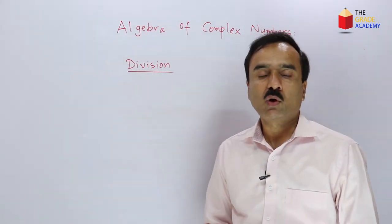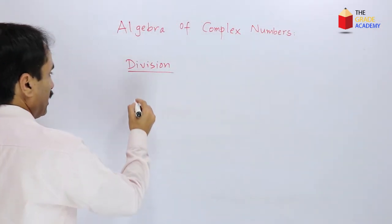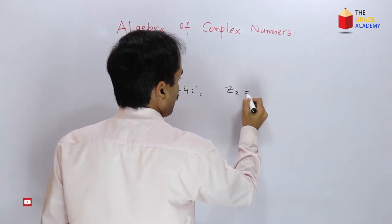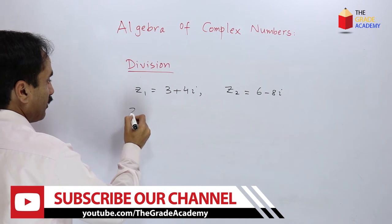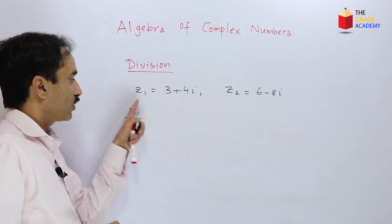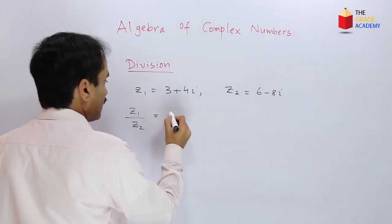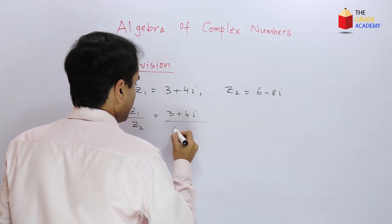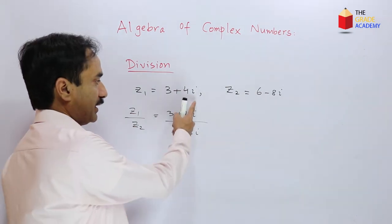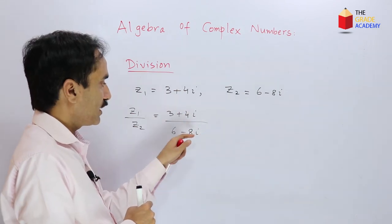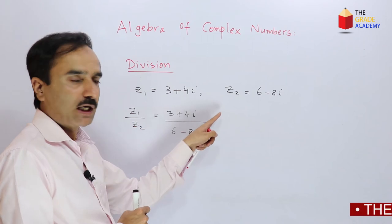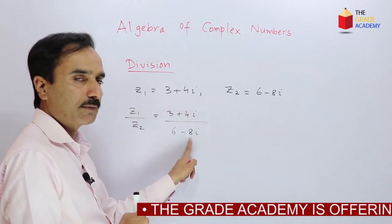Now let's learn to divide complex numbers. Suppose we have z1 equal to 3 plus 4i and z2 equal to 6 minus 8i, and we have to find z1 over z2 — that is, (3 plus 4i) divided by (6 minus 8i). To perform this division, we multiply the whole fraction by the conjugate of the denominator, which means we multiply and divide by 6 plus 8i.